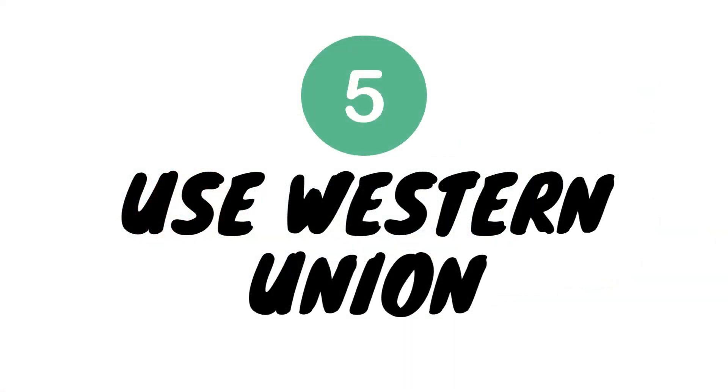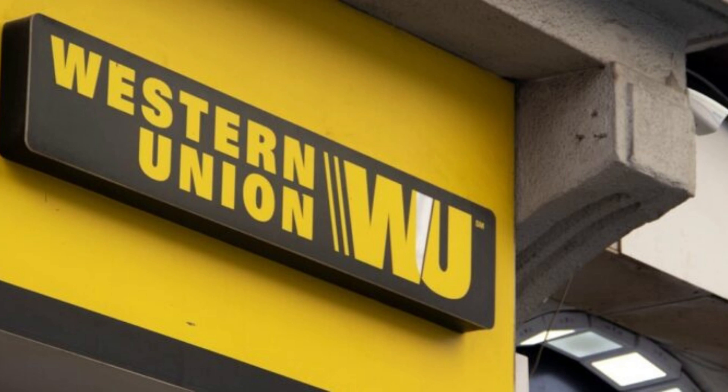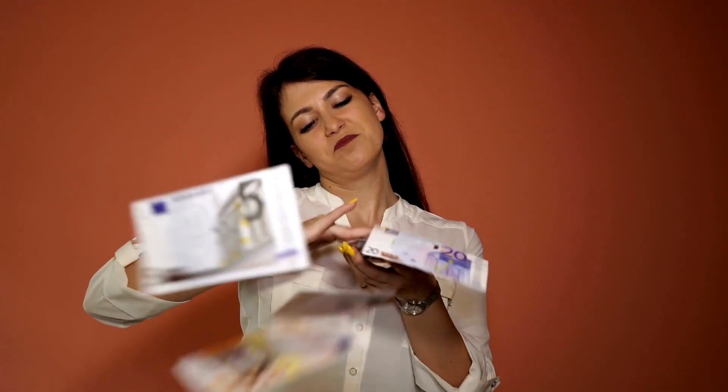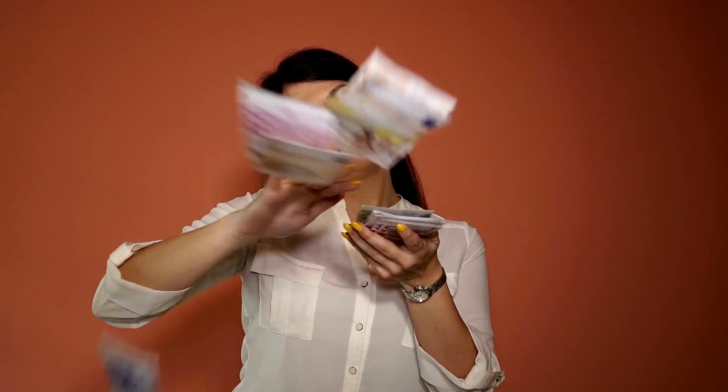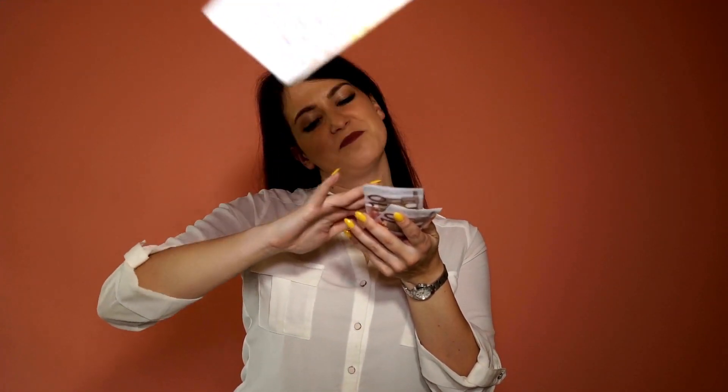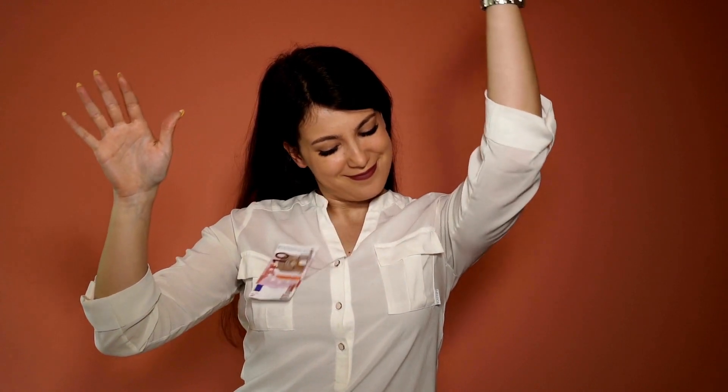Step 5: Use Western Union. Last but not least is using Western Union. Just like MoneyGram, Western Union has been in the business of transferring money for years now. By using it, you will never go a foot wrong. Those are the few ways how to send money from Uganda to Kenya. What are your thoughts on these ways?